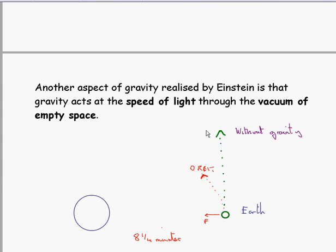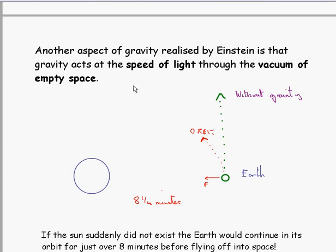Another aspect of gravity, realized by Einstein, is that gravity acts at the speed of light. This acts through the vacuum of empty space.